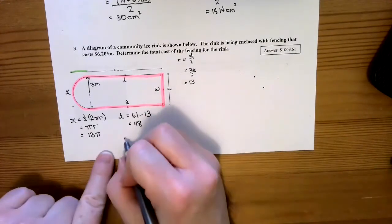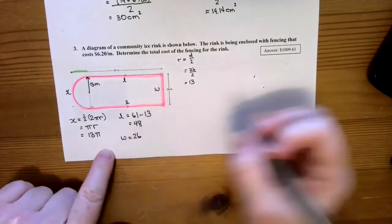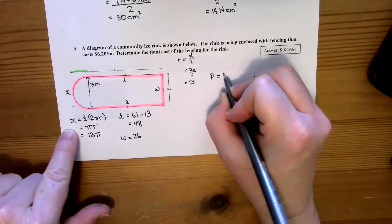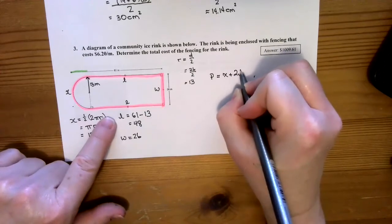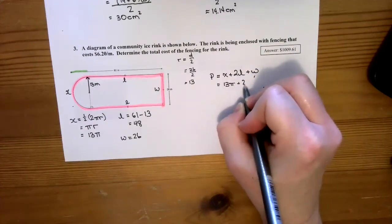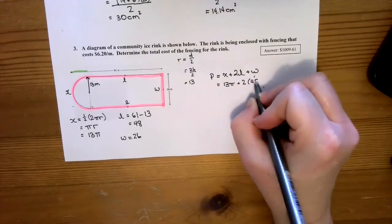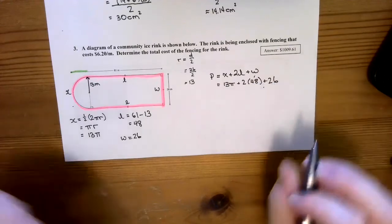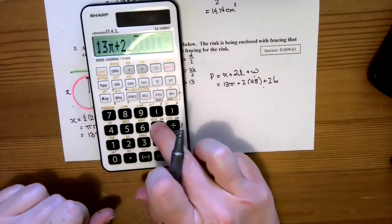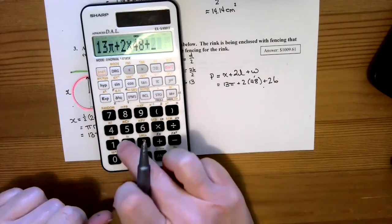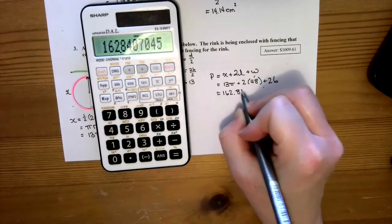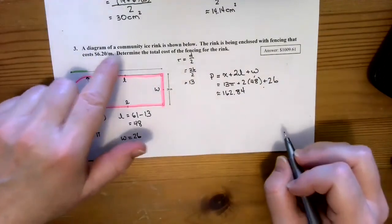Now we have all our parts, and we know that W equals 26. So now we can figure out our perimeter. Our perimeter is going to equal x plus 2L plus W. In this case, it equals 13π plus 2 times 48 plus 26, which is approximately 162.84 meters.